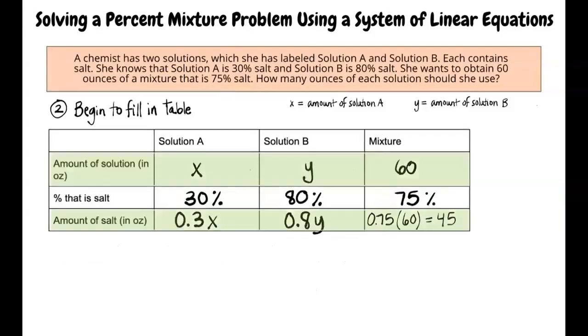Using the table, we can write out the system of linear equations from the first and third rows. Knowing that solutions A and B will be added to make the mixture, what are the equations? The amount of solution A added with the amount of solution B equals 60 ounces. So what equation represents that information? The equation should be x plus y equals 60.